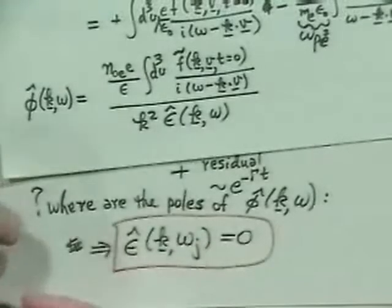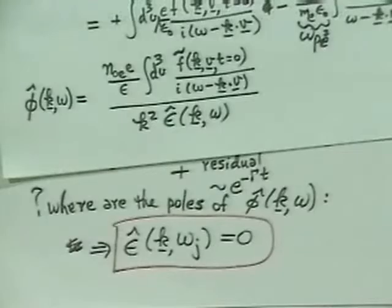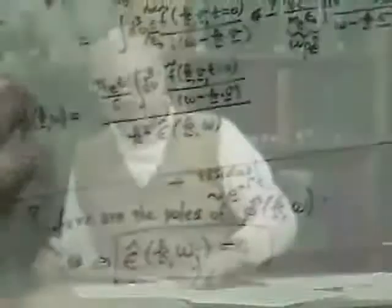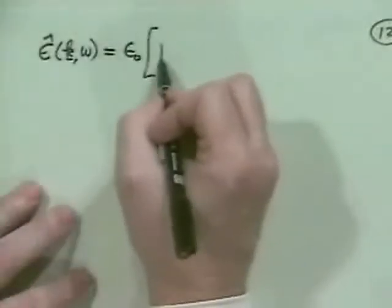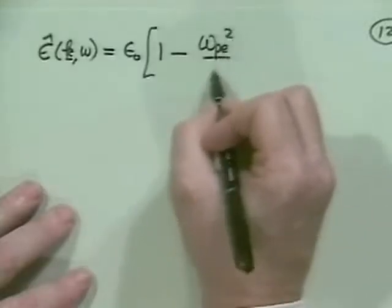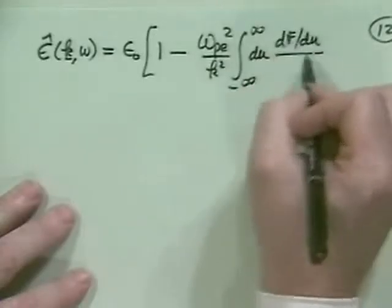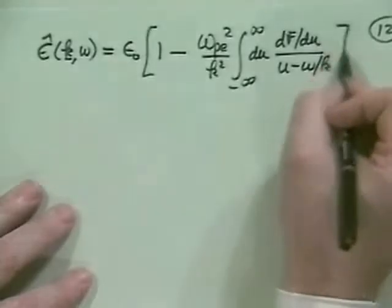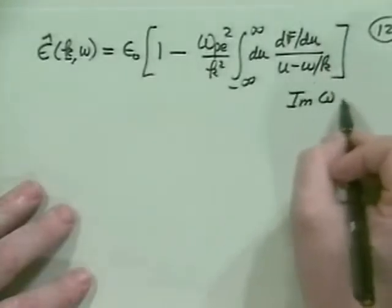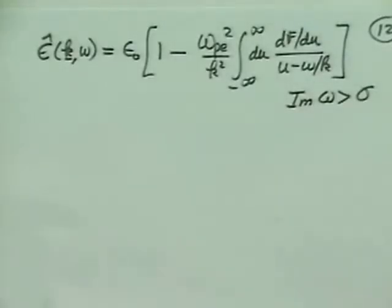Let's look at our dispersion relation and find its zeros. We have ε̂(k, ω) = ε₀ times [1 − (ωₚₑ²/k²) ∫_{−∞}^{∞} (∂f/∂u)/(u − ω/k) du], with the constraint that the imaginary part of ω must be greater than σ.